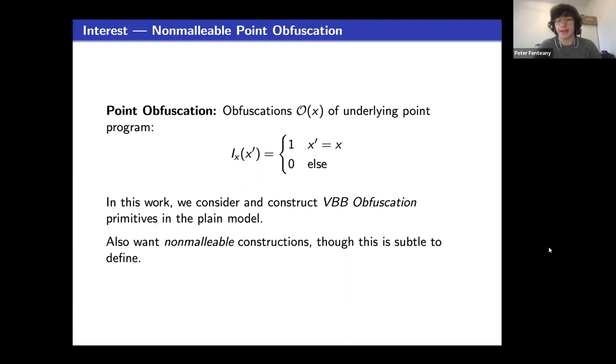In this work, we're considering and constructing VBB obfuscation, and specifically we're trying to do this in the Plain Model. We also want non-malleability, which as we discussed in the full talk is actually pretty subtle to define, but abstractly means that given an obfuscation of a point x, it's hard to get an obfuscation of a point x prime that is some way related to that point x.